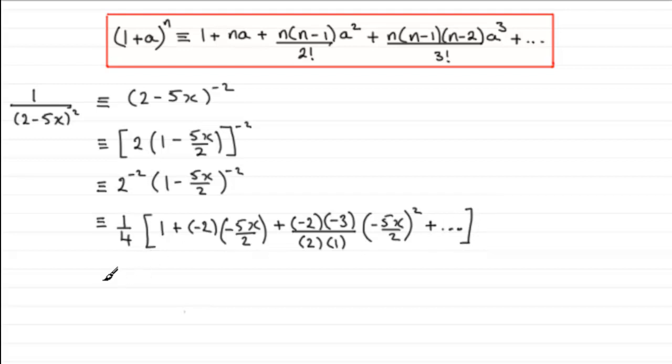Now all we need to do next is just multiply through by a quarter and clean up these terms. So for the first term we've got 1, so quarter times 1 is a quarter. For this next term those two twos cancel, leaving us with just simply 5x, so we end up with 5x over 4 or 5 quarters x.